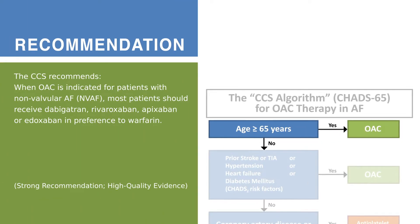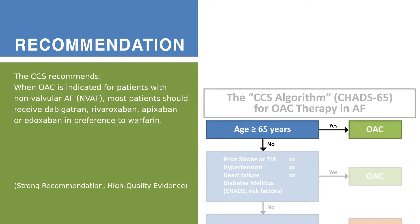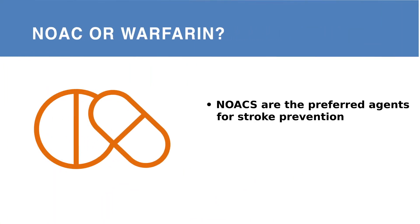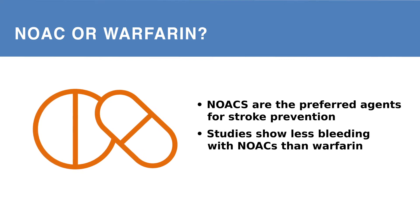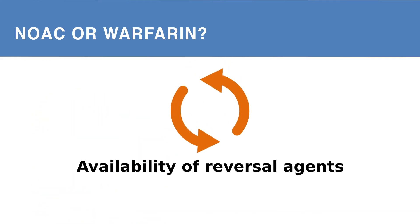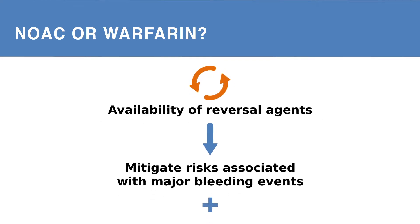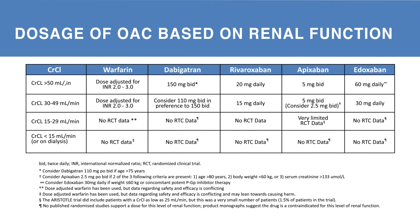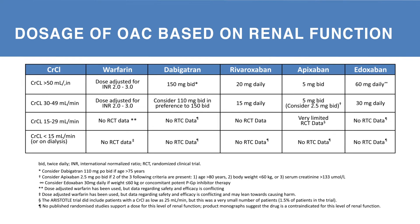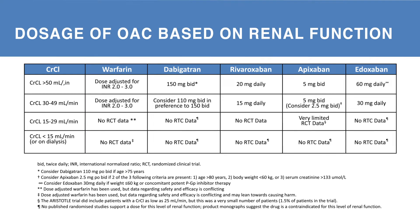The CCS recommends that when OAC therapy is indicated for patients with non-valvular AF, most patients should receive dabigatran, rivaroxaban, apixaban, or edoxaban in preference to warfarin. NOACs are the preferred agents for stroke prevention in NVAF patients who merit anticoagulation. Although there was less life-threatening bleeding with NOACs than with warfarin in the randomized controlled trials, bleeding remains an important risk. The availability of specific reversal agents has the potential to mitigate the risks associated with major bleeding events and patient and physician acceptance of OAC therapy. One key difference between warfarin and NOACs is the need for INR monitoring with warfarin. In contrast, while NOACs do not require INR monitoring, they are largely eliminated via the kidneys and therefore dosage adjustments are recommended in the setting of renal dysfunction.